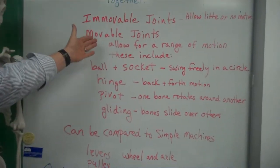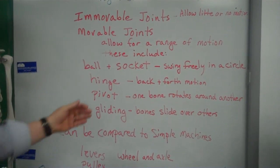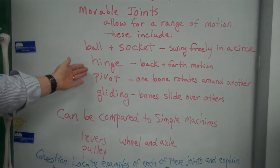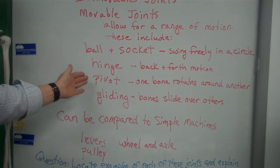And as you can see, movable joints allow for a range of motion. And these include ball and socket joints, hinge joints, pivot joints, and gliding joints. These are movable.